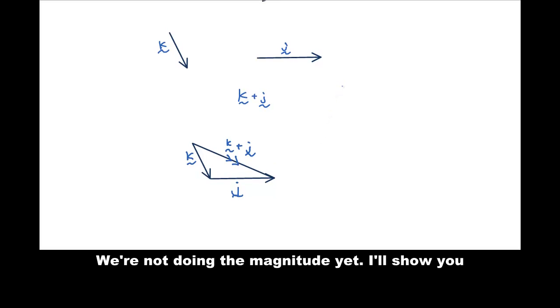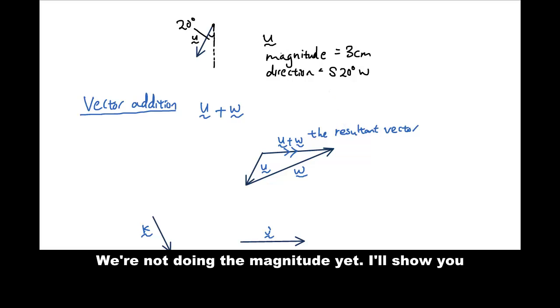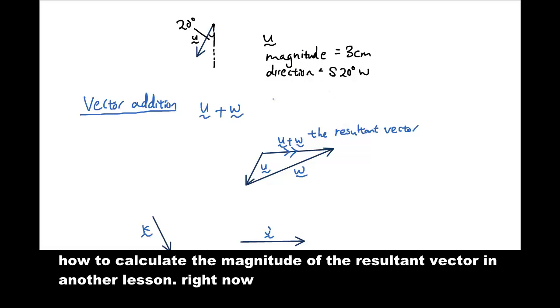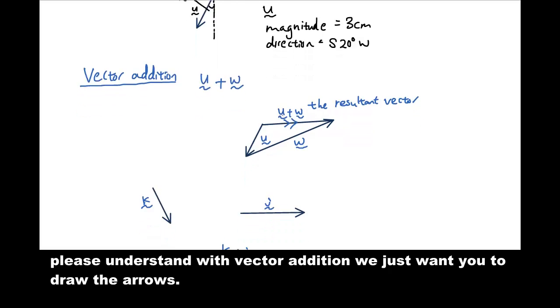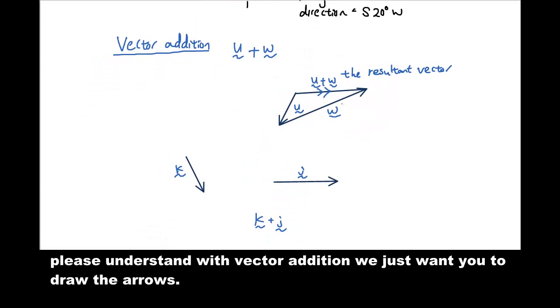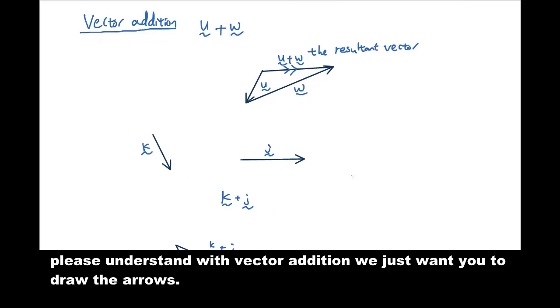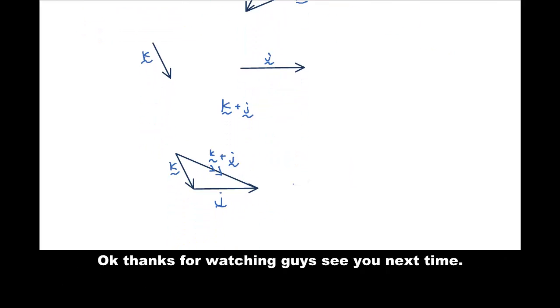And please, we're not doing the magnitude yet. I'll show you how to calculate the magnitude of the resultant vector in another lesson. But right now, please understand vector addition, we just want you to draw the arrows first and later on we'll talk about how to find the magnitude of the resultant vector. Okay, thanks for watching guys. See you next time.